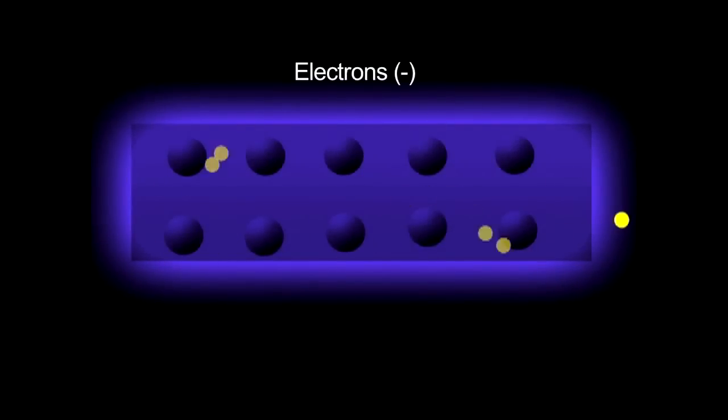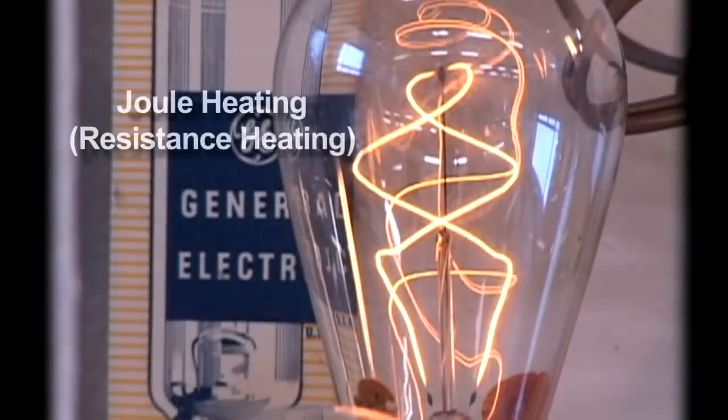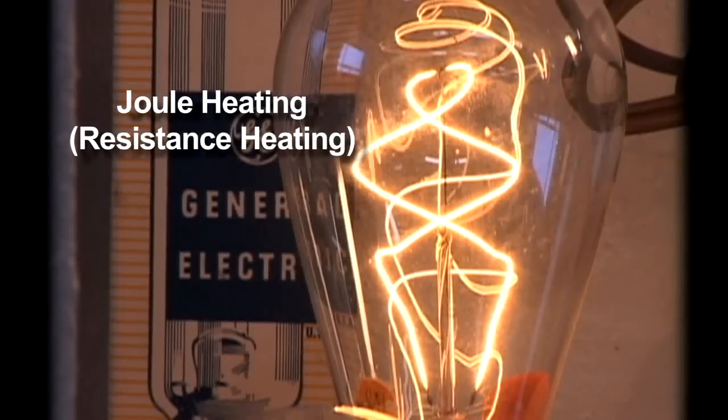Electricity is the flow of charged particles or electrons. We can measure the quantity of moving electrical charges or current by the amount of charge passing a given point each second by the effect it creates in the form of joule heating or magnetic fields.